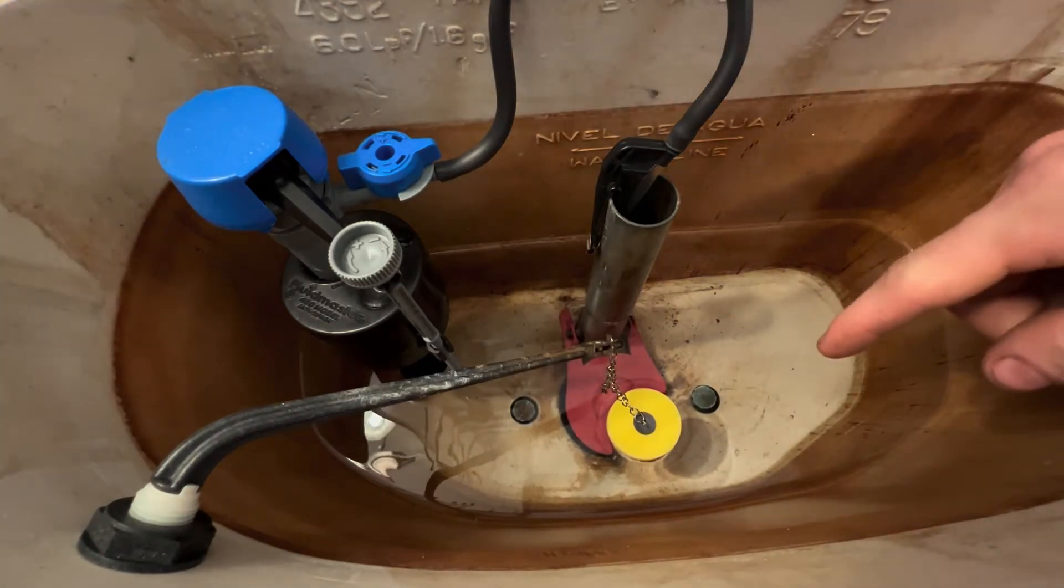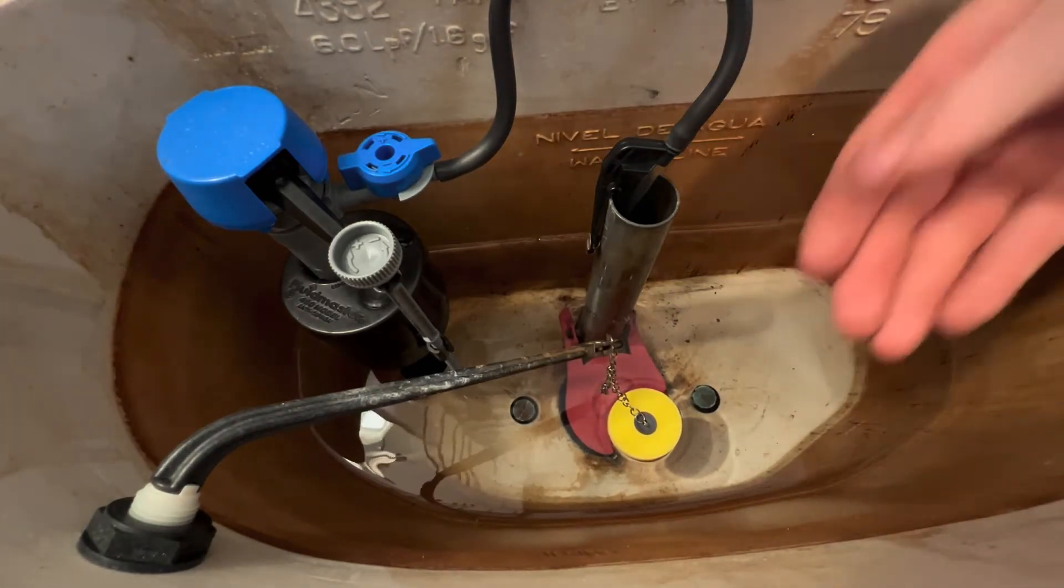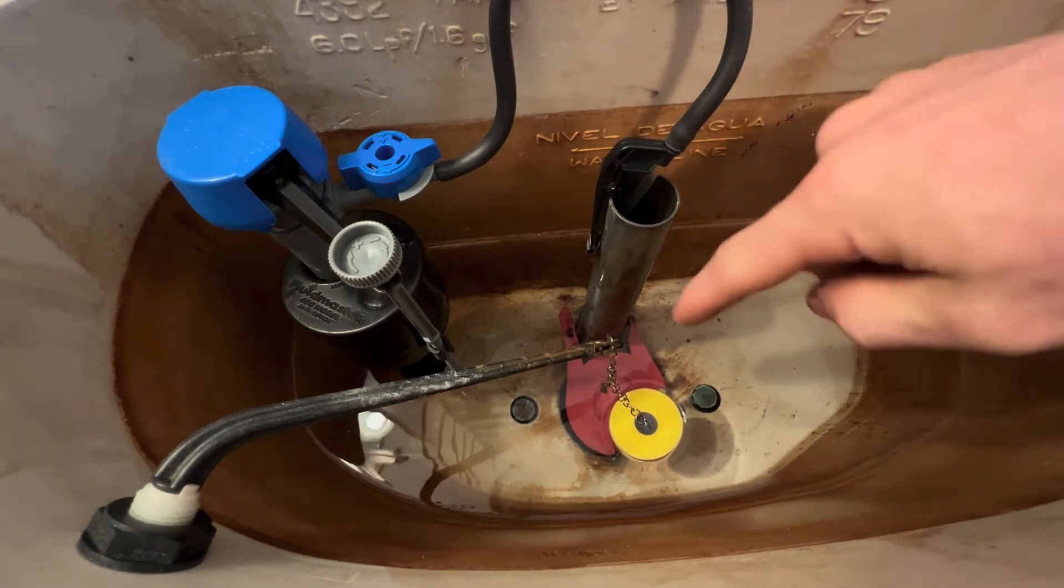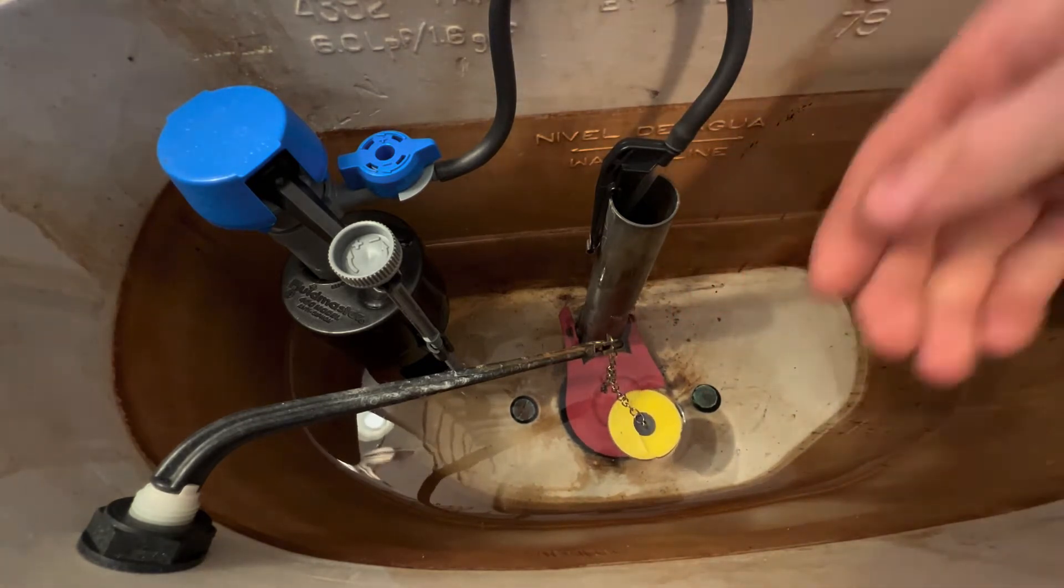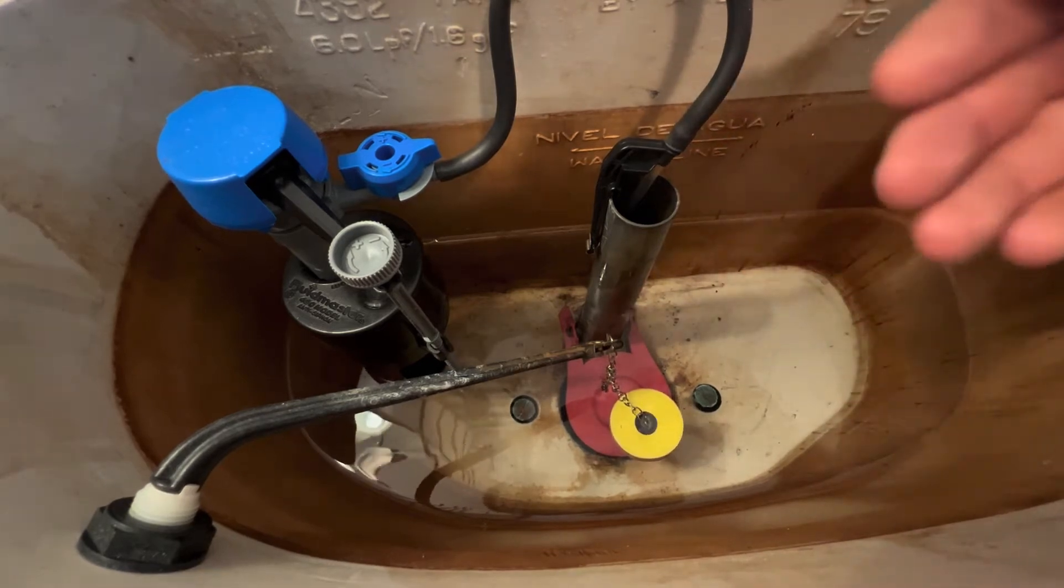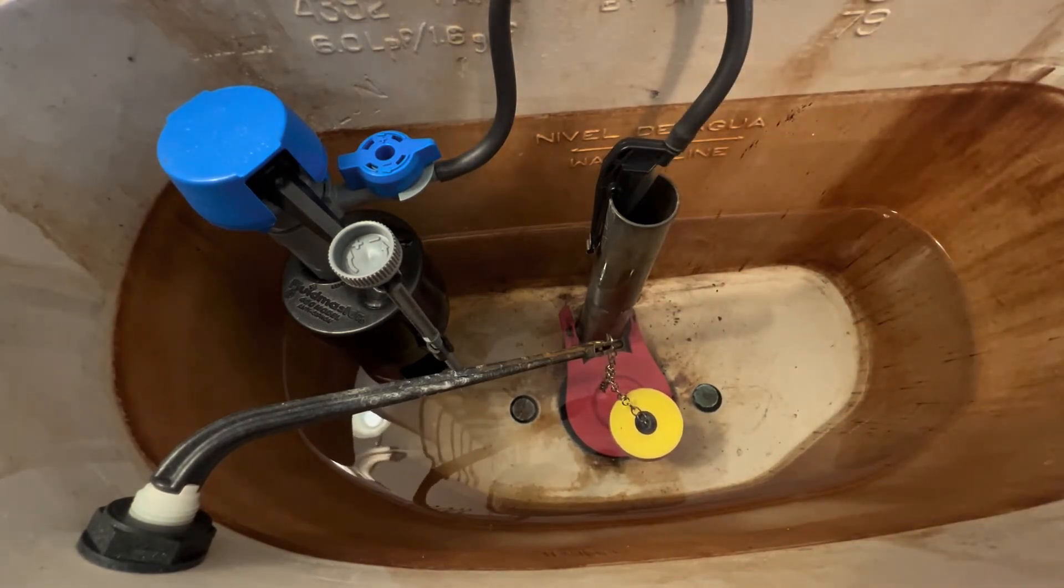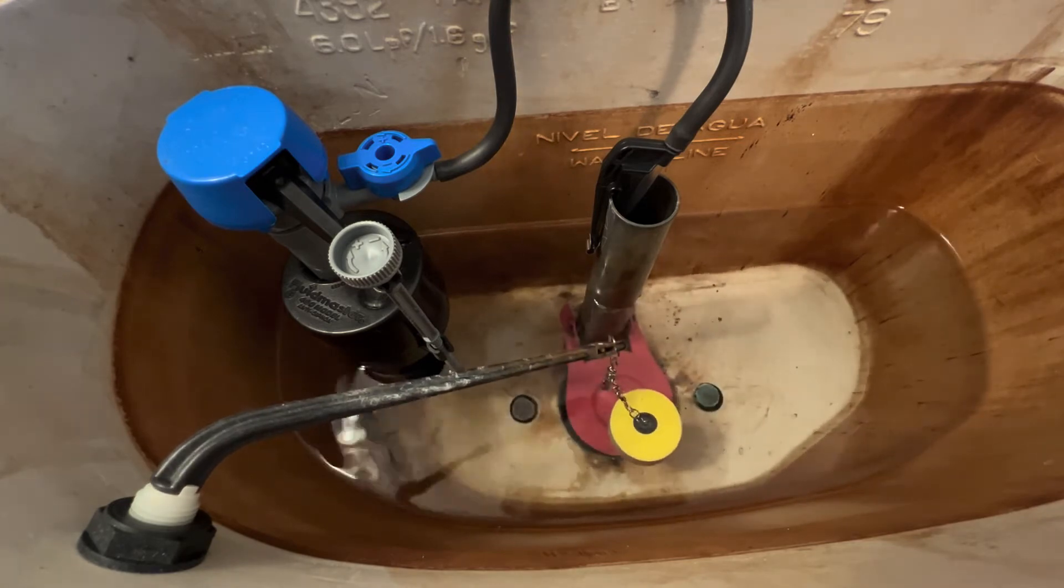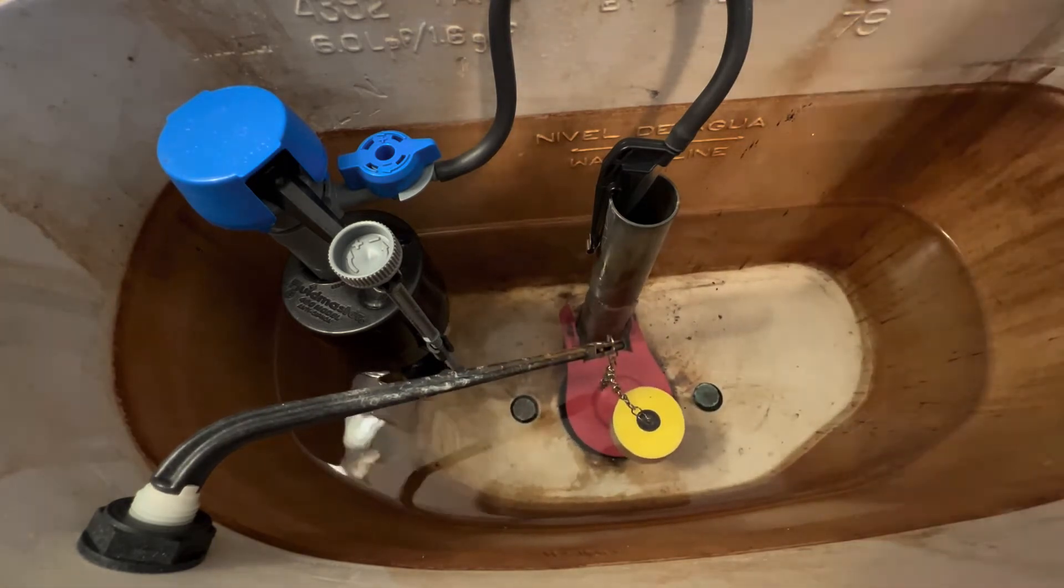So that float will float in the water and it's buoyant, so it's trying to pull up. But the weight of the water on the top surface of that flapper is enough that it can't pull the flapper up. So that flapper won't come up until you actually engage the trip lever and trip it up.